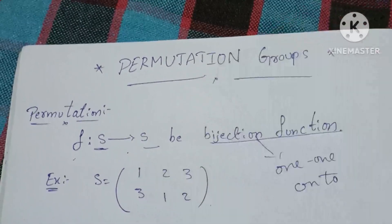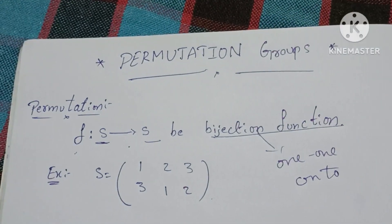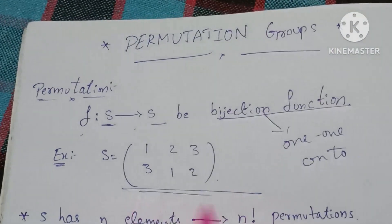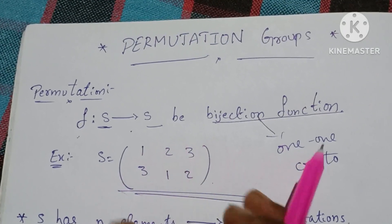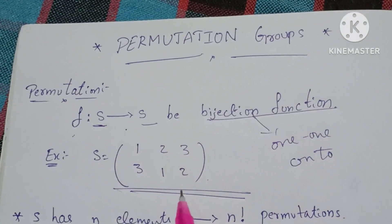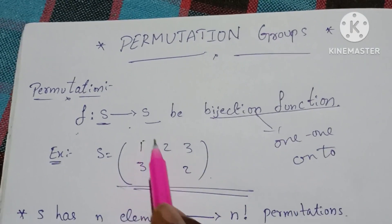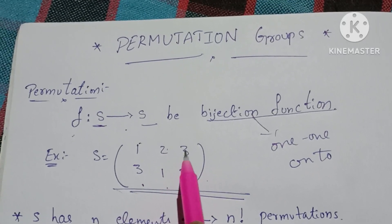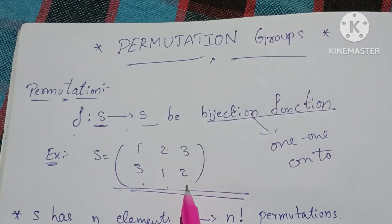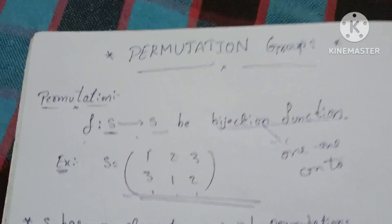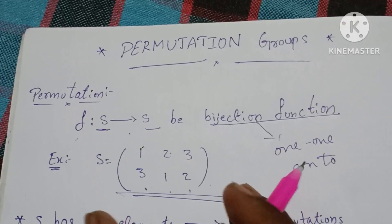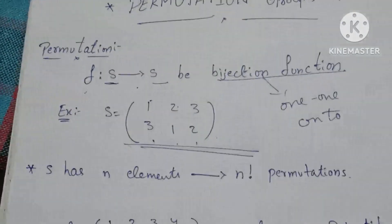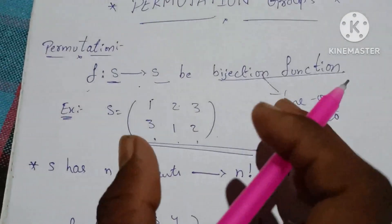Where is the Permutation? There is a matrix formula. In this matrix formula: 1 is related to 3, 2 is related to 1, 3 is related to 2. This formation is called a Permutation.